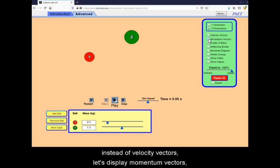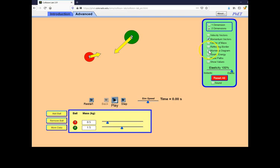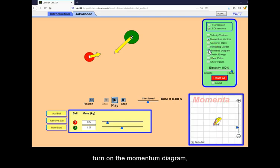Instead of velocity vectors, let's display momentum vectors, turn on the momentum diagram, and play the simulation.